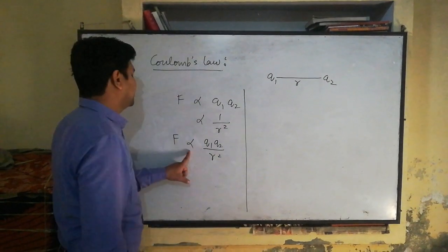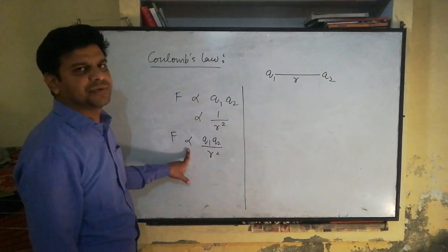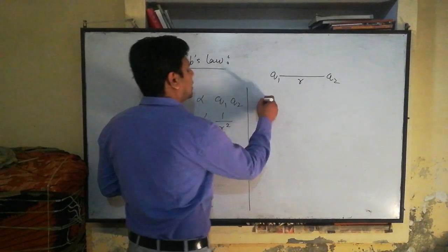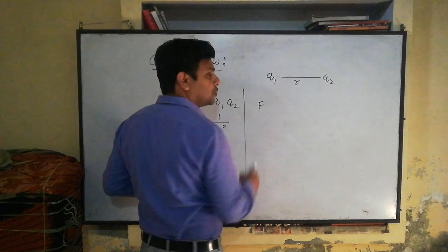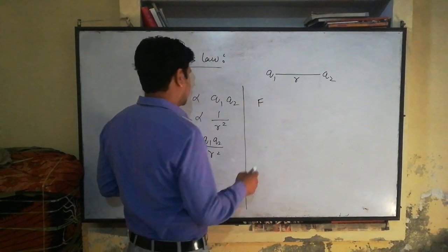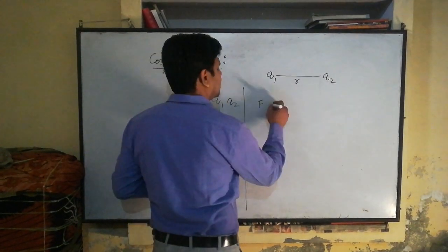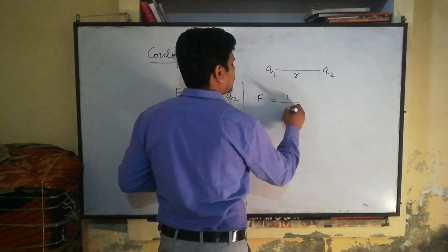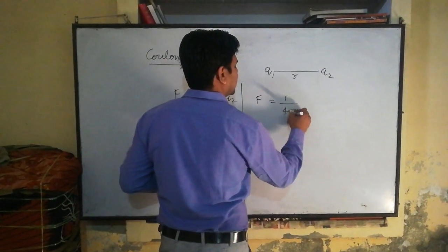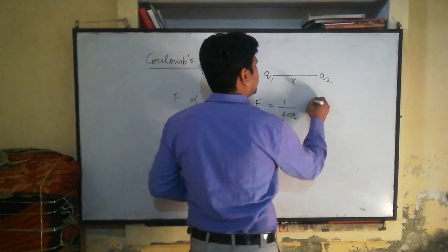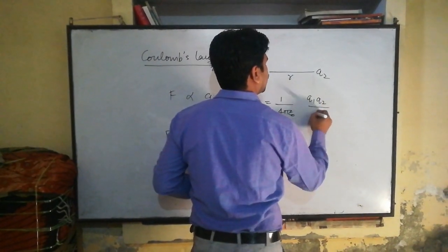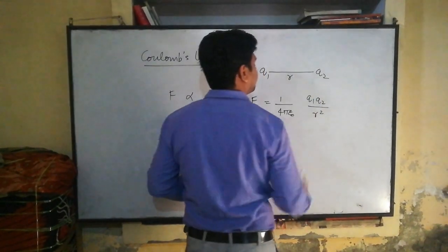When we convert this proportionality sign into an equality sign, we introduce a proportionality constant, which is 1 over 4π ε₀. So the force F equals (1 over 4π ε₀) times Q1 Q2 over R squared.